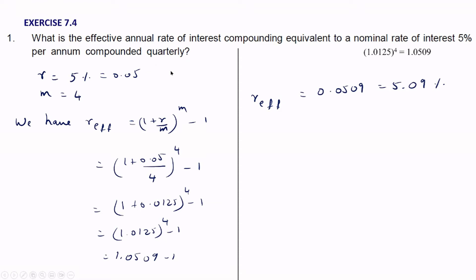A similar question can be expected for 2 marks. Writing the formula carries 1 mark, and substituting the values and getting the final answer carries 1 mark.